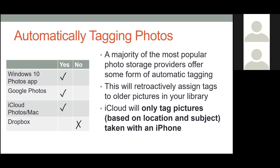A majority of the most popular photo storage providers offer some form of automatic tagging. Windows 10, Google Photos, and iCloud to some degree all offer it. iCloud only works with pictures taken on an iPhone with the camera app, but Windows 10 and Google Photos will retroactively scan your older pictures and assign tags based on what they see. Dropbox unfortunately does not offer tagging whatsoever — you can't even add tags manually.